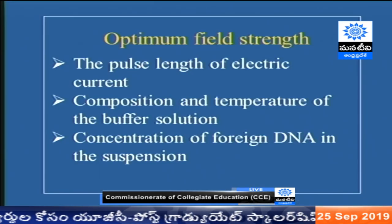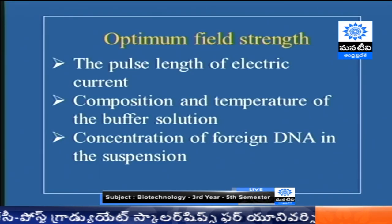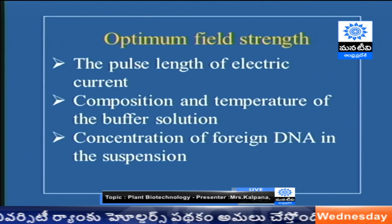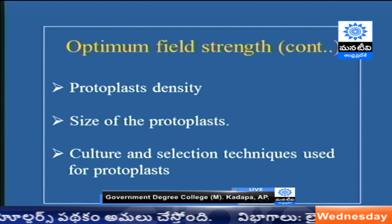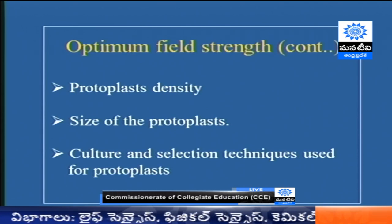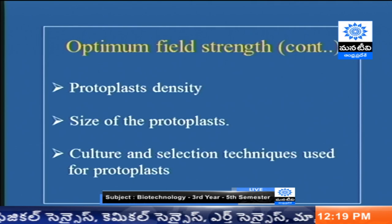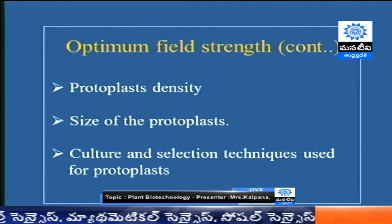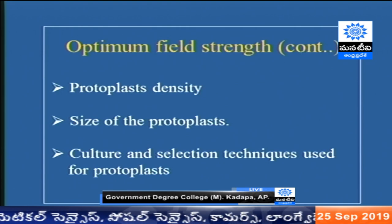While optimizing the field strength, we have to take into consideration many factors: the pulse length of the electric current, composition and temperature of the buffer solution, concentration of foreign DNA in the suspension, protoplast density, size of the protoplast, and the culture and selection techniques used. These are the factors to consider while doing an electroporation experiment.